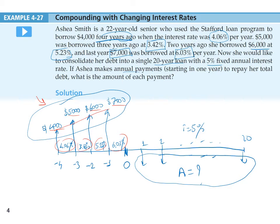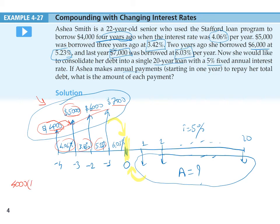To make the two sets of cash flows equivalent, I need to select a base year. This could be year minus four or year twenty, but I'll select time zero as the base year since it minimizes the number of calculations. I will move the borrowed amounts forward to time zero and the payment series backward to time zero and make them equal. For the first loan, I shift the $4,000 one period forward using F/P at 4.06% and 1 period.